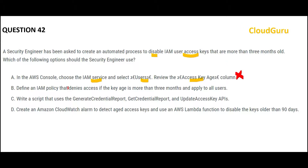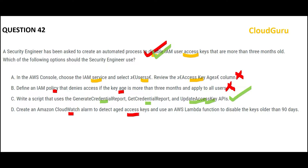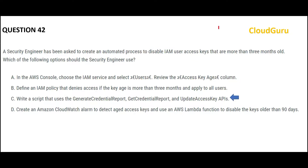Option B says define an IAM policy that will deny access if the key age is more than 90 days — but it's not about denying access, it's about disabling it. Disabling and denying are different, so this is wrong. Option C is correct because you need to do three things: first generate the credential report, get the report, and then update the access keys using the update access key API to disable them. The last option uses CloudWatch, which is for alarm metrics — not for identifying the age of access keys, so that's wrong. Also remember: if AWS already provides a built-in option, do not create a custom solution. Option D is a custom solution; Option C is built-in. That is my final answer.